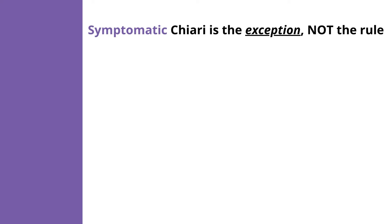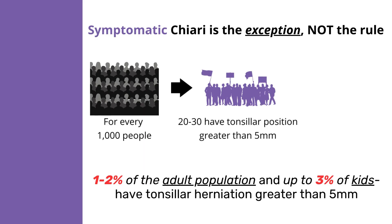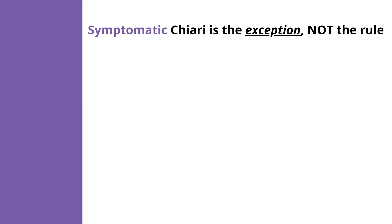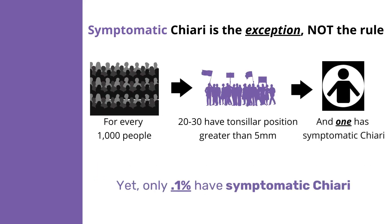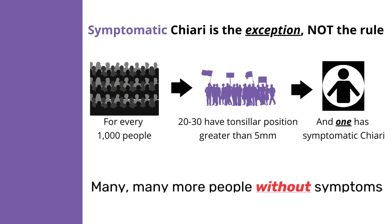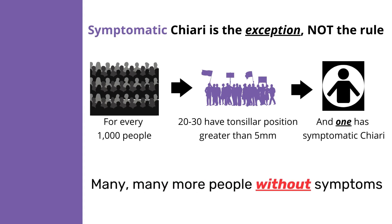In fact, large studies have shown that symptomatic Chiari is the exception, not the rule. Specifically, one to two percent of the adult population and up to three percent of kids have been found to have tonsillar position greater than five millimeters, yet only about 0.1% of people have symptomatic Chiari. Therefore, there are many, many more people without symptoms than with.